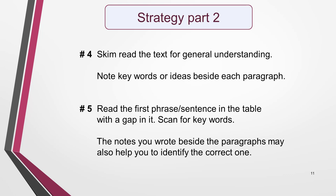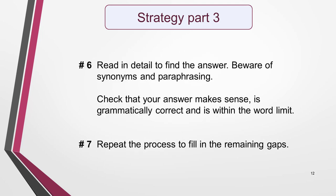Now go back to the table and read the first phrase or sentence with a gap in it. Select key words and scan for them in order to locate the paragraph that contains the answer. The notes you wrote beside the paragraphs may also help you to identify the correct one. Next, read the section of text you've identified in detail to find the answer. Remember that synonyms and paraphrasing may have been used. Check that your answer makes sense, is grammatically correct, and doesn't go over the word limit. Write your answer on the answer sheet, making sure you spell it correctly. Then repeat the process to fill in the remaining gaps.